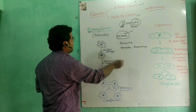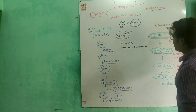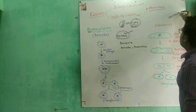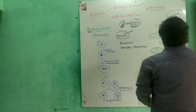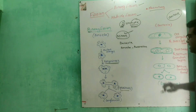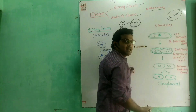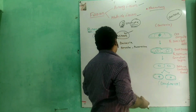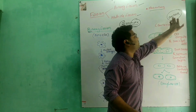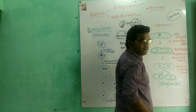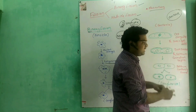In bacteria, binary fission does not involve spindle fiber formation. The nucleus division in bacteria is amitosis. The cell elongates, then DNA replication occurs — the DNA is copied — and then the cell divides.